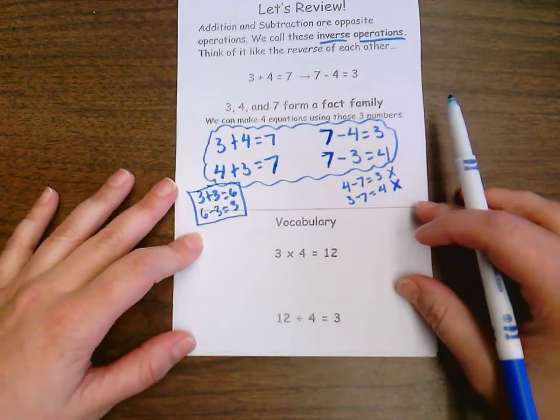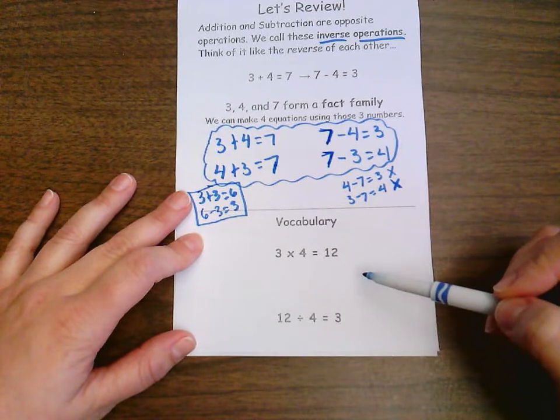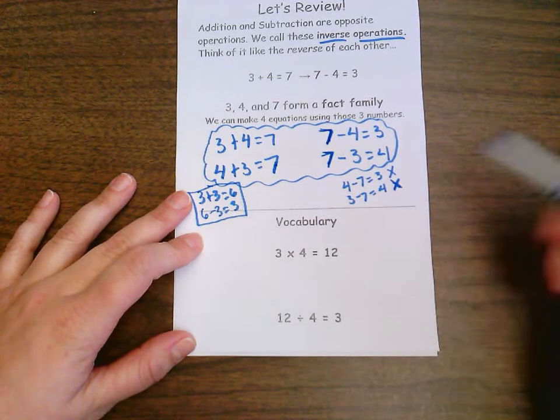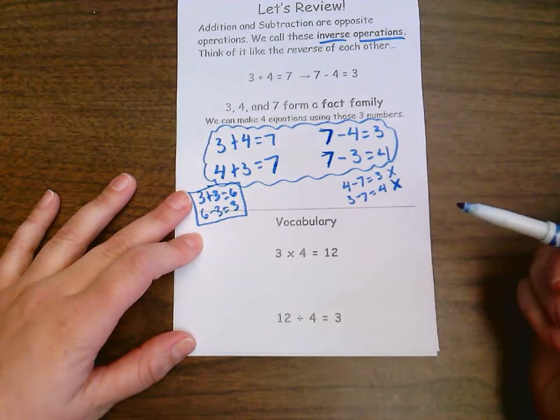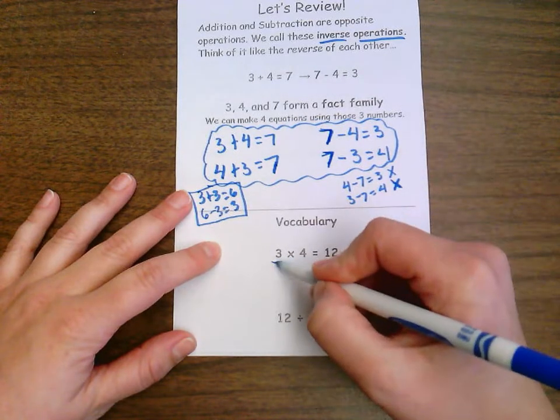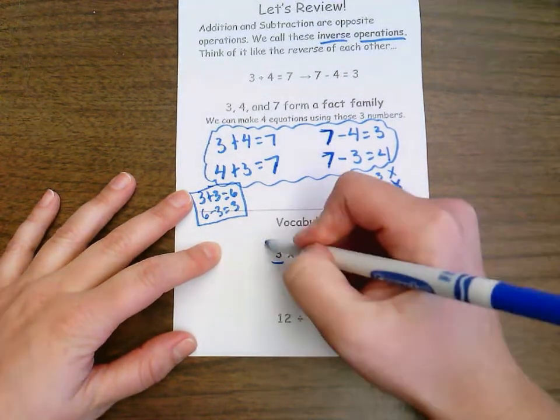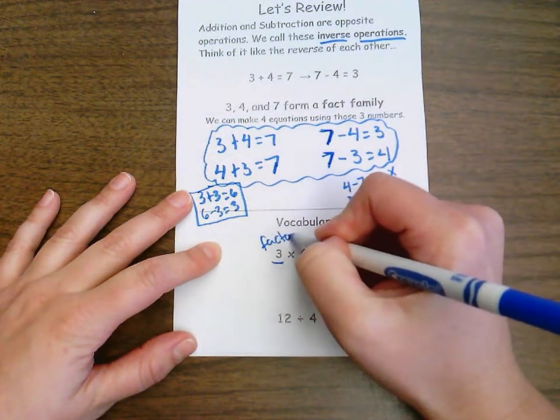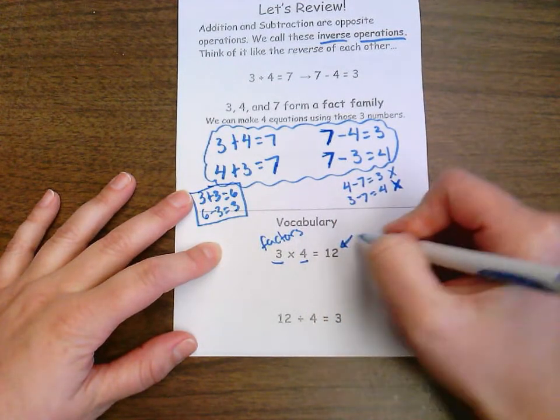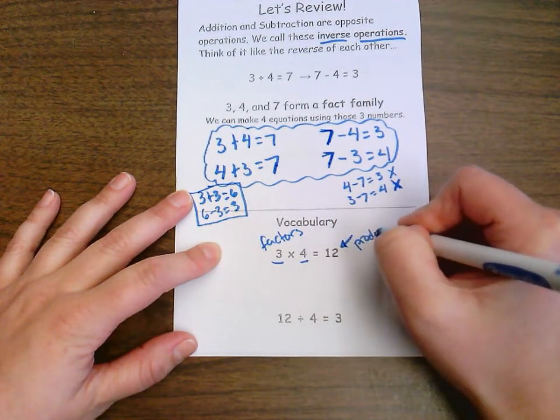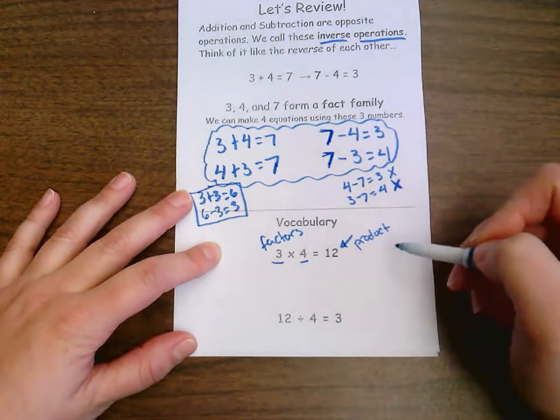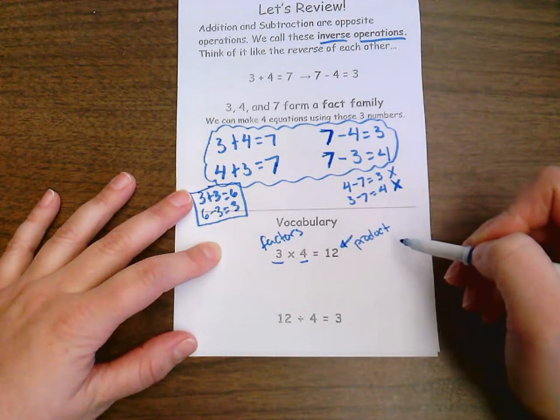Let's review a little bit more. Let's talk about some vocabulary. Down here we have our multiplication and we are very familiar with our vocabulary terms here. We know that three and four are factors. And we know that 12 over here is called our product. The numbers we're multiplying by are our factors and our answer is called the product.